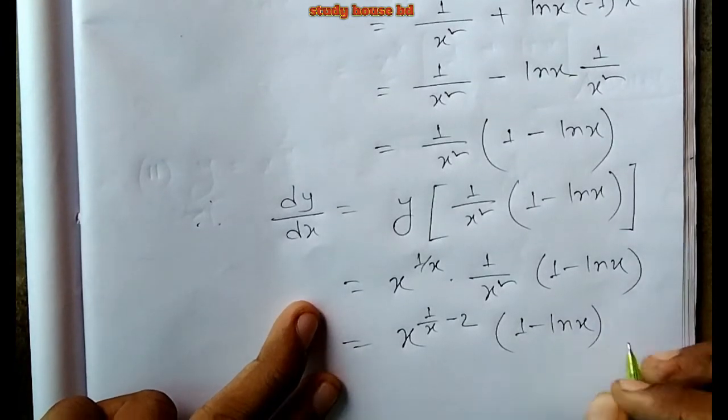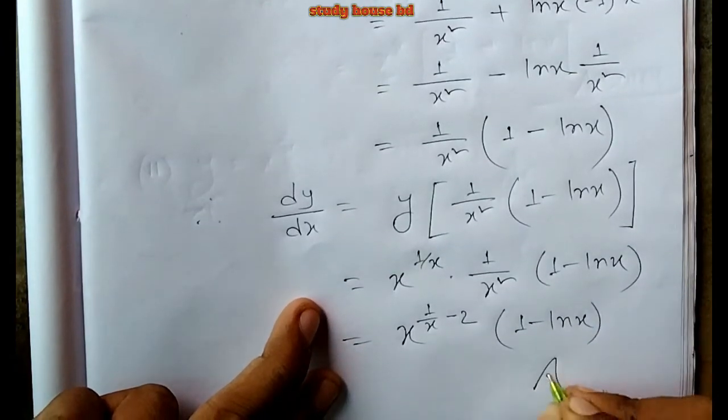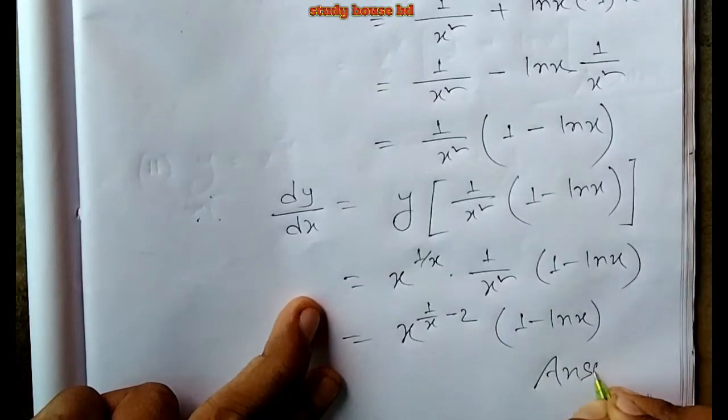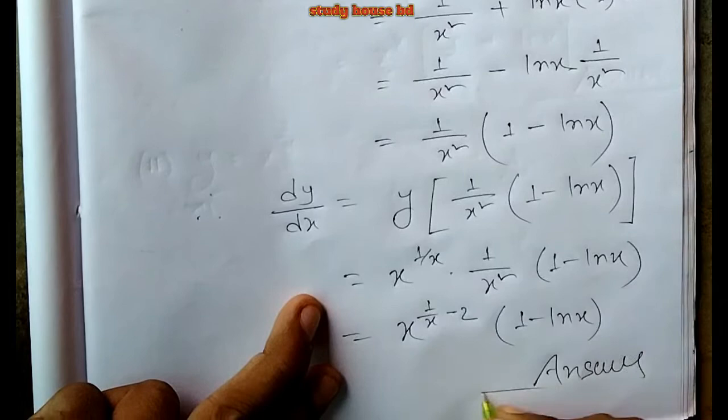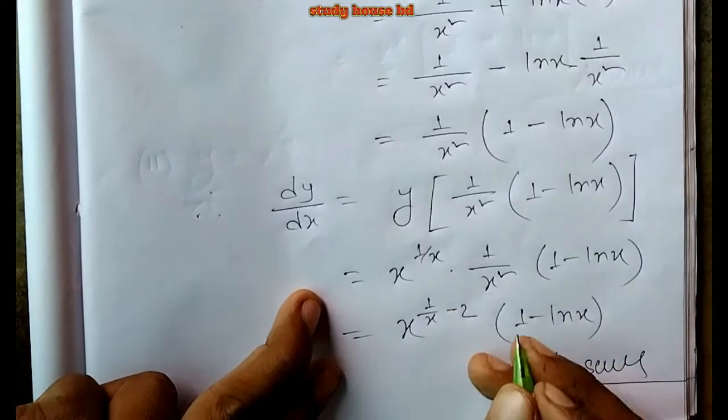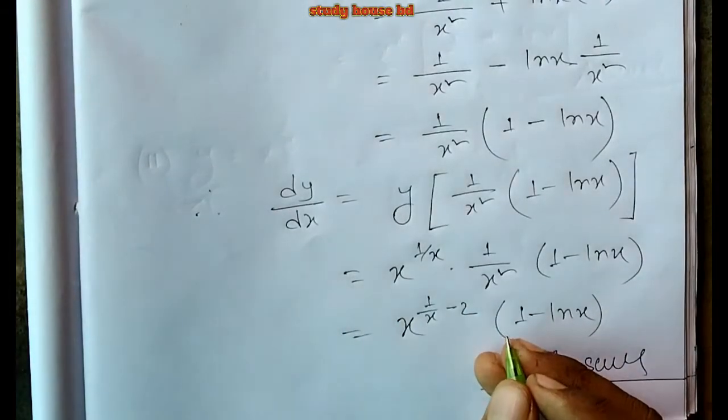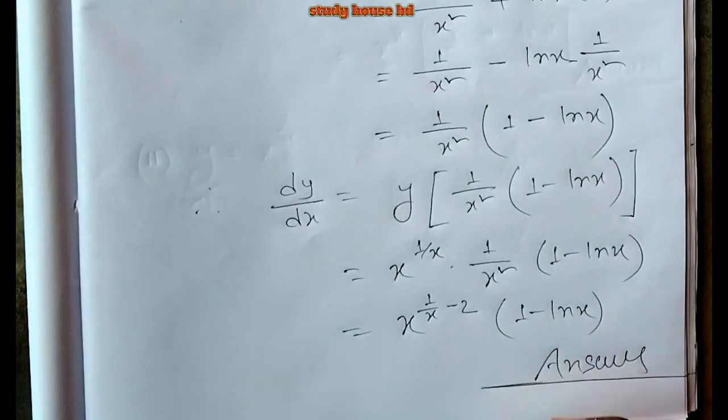So that is our answer. We can also write this as (1 minus ln x) times x to the power (1/x) divided by x squared, or equivalently (1 minus 2 ln x) by x to some power.